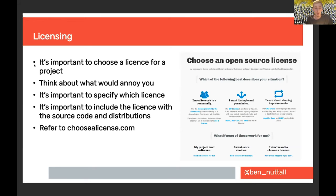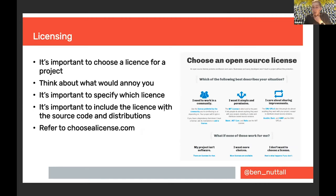It's also important to include the licence with the source code and any distributions you make. If you make releases and your code is going to end up scattered across the globe running on other people's machines, you have to include the licence with the code as it gets moved around — otherwise you've got code that is unlicensed as far as the user is concerned. The best place to learn about licences and which one to use is choosealicense.com, which gives you an easy way to navigate the differences.